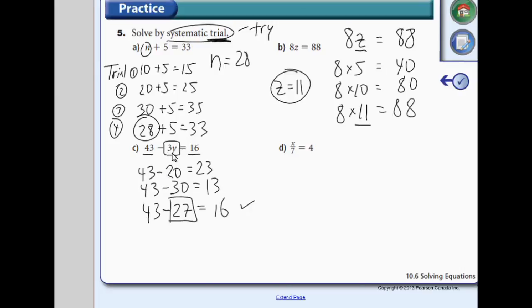Well, 3 times what number gives us 27? So 9, 18, 27. So y has to equal to 9. And we can test that out again. By doing 3 times 9, which is 27, and doing 43 minus 27, which will give us 16.